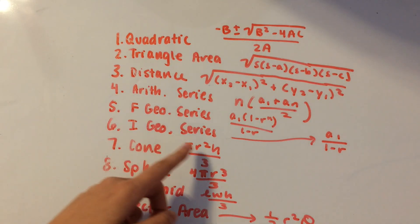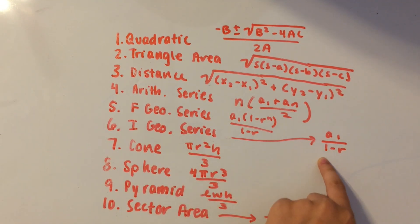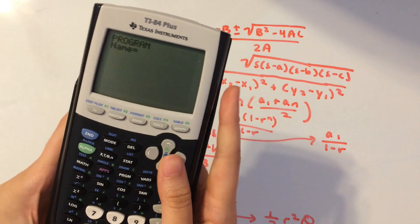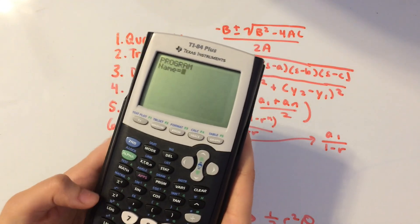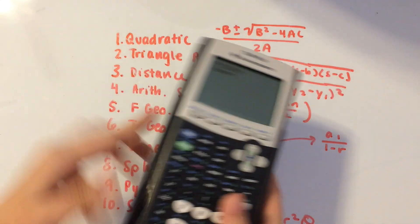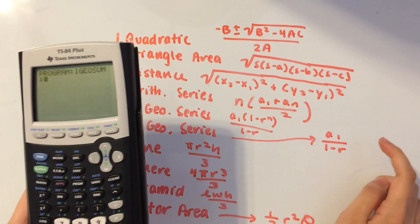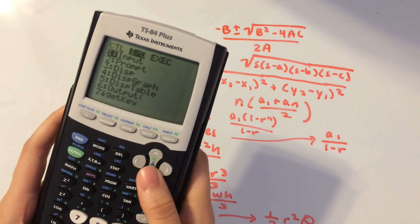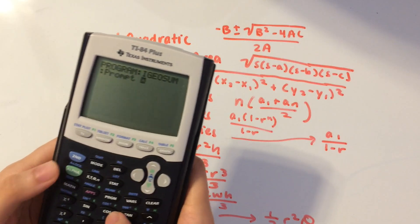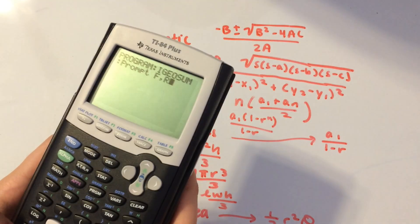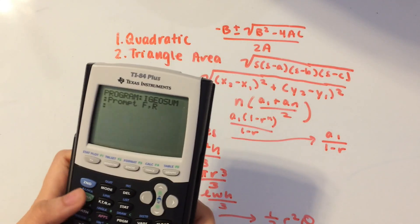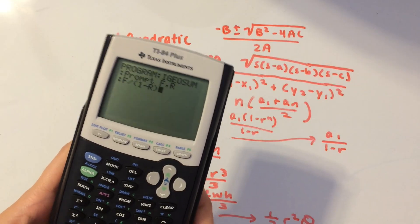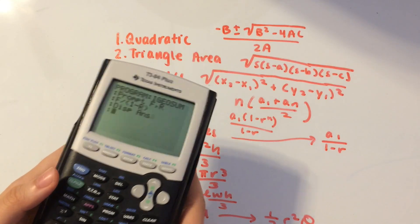The next one is an infinite geometric series: A-sub-1 over (1 minus R). Create a new program and call this IGEOSUM for infinite geometric series sum. Prompt for F — which is A-sub-1, the first term — and R for the ratio. Then compute F divided by (1 minus R) — don't forget the parentheses around that term. Go to Program, IO, display your answer, and we're done.